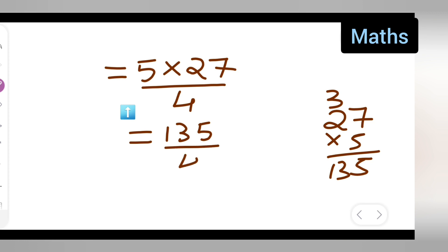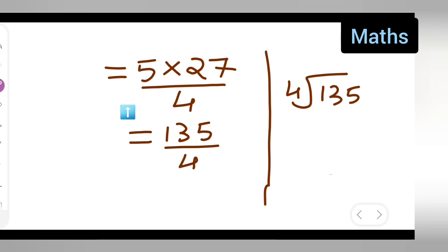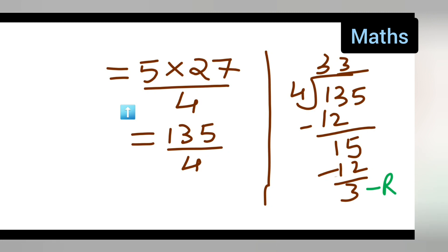Now I'll have to express this in a mixed fraction. So how are you going to express this? 4 into 135 - showing division. 4 times 3 is 12, 13 minus 12 is 1. Then 5 comes down. 4 times 3 is again 12, minus that you get 3. So your answer will be 33. The remainder is 3, this is your quotient, and this is your d.